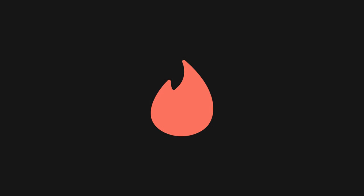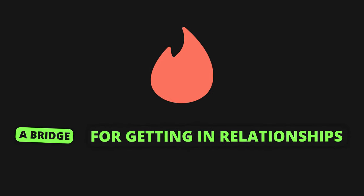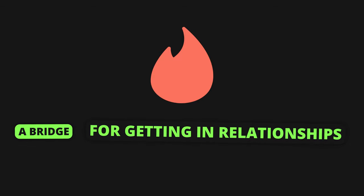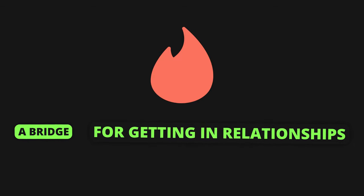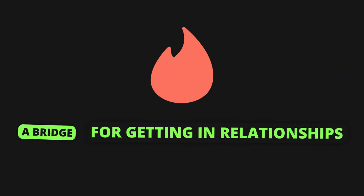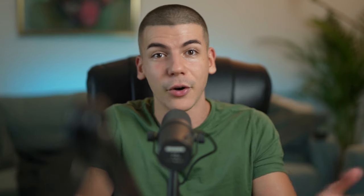Someone has a problem they want to solve, and you can close that gap with a digital product — whether that's a course, a PDF guide, or anything else. Even an app like Tinder is a bridge to someone getting in a relationship. Or someone wants to learn how to cook and can buy a course that teaches them exactly how to do that. A digital product is essentially a virtual product or service that offers utility to a human being.